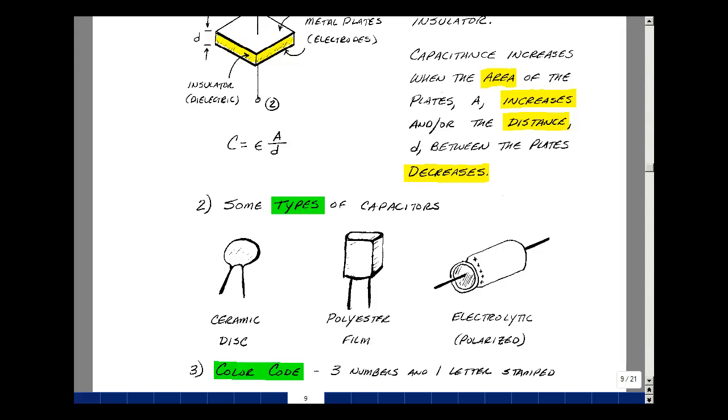If you look online or in catalogs, you see that there are many different types of capacitors. Some are called ceramic disks, others are called polyester film, and some are called electrolytic or polarized capacitors.